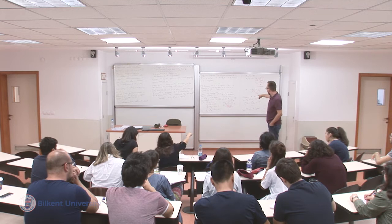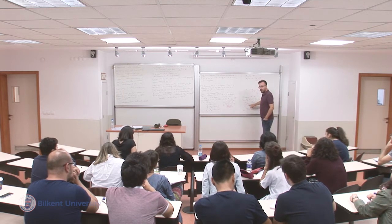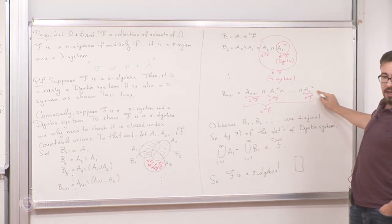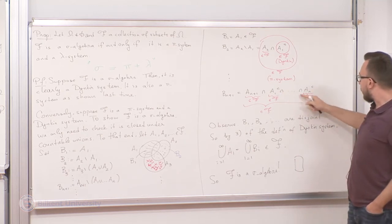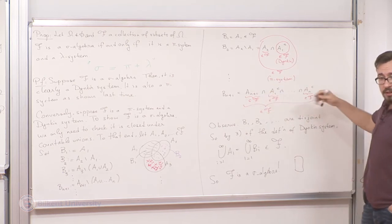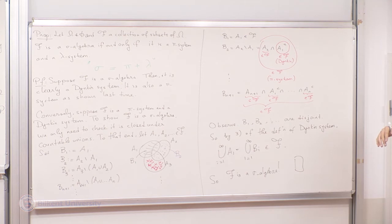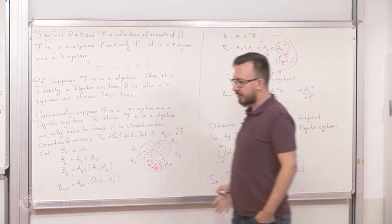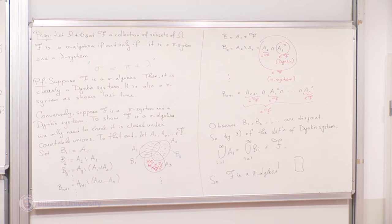In the expression for B_{n+1}, that is a finite intersection — there are 1, 2, etc., up to n+1 terms in this intersection, so we can use the pi system property. So that's a famous result: sigma equals pi plus lambda in quotations.